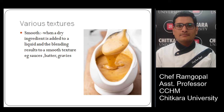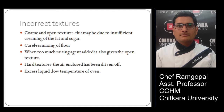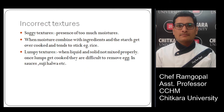There are also some incorrect textures. Coarse and open texture may be due to insufficient creaming of fat and sugar, careless mixing of flour, or too much raising agent added, giving an open texture to the food product. Hard texture occurs when air is driven off by excessive liquid or low oven temperature, giving incorrect texture to any food product.